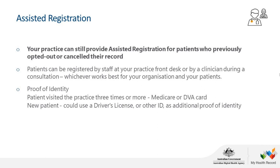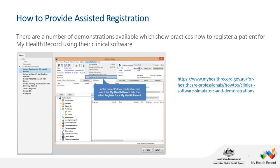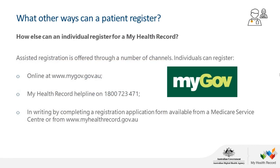This is an example in Best Practice showing where the assisted registration tab is located. You can also access the agency's on-demand training portal to practice — just select your software and instructions are provided. There are also other ways for patients to register themselves if you don't have time in practice — through MyGov, which is an easy process. You might like to print out some MyGov brochures and have them available to give to patients, along with your My Health Record brochure.